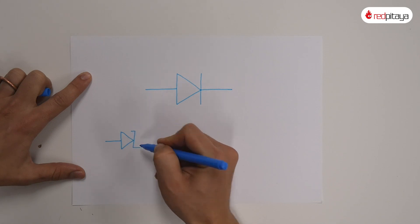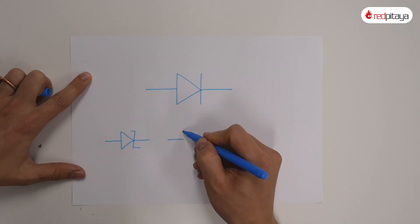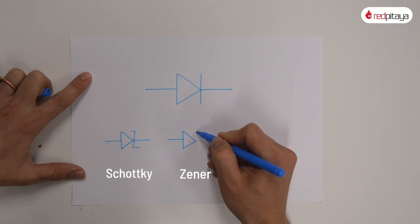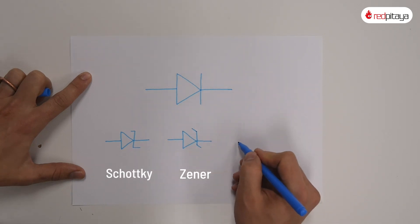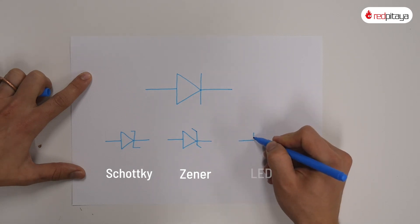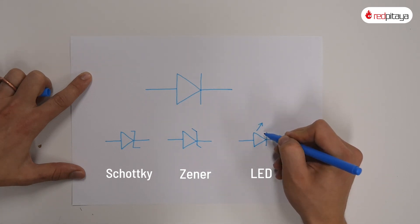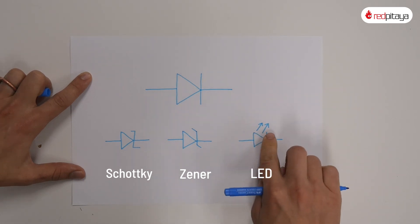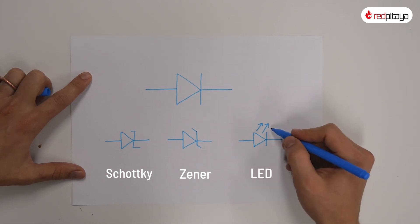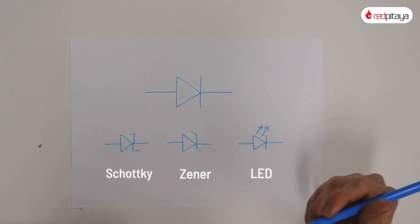Besides the first one, you will commonly encounter Schottky and Zener diodes. Arguably the most famous of all diodes are light-emitting diodes, better known as LEDs. The fact that they emit light is mirrored in their symbol. There you can see a pair of arrows exiting the classic diode symbol. There are even more diodes, but we won't discuss them in this video.